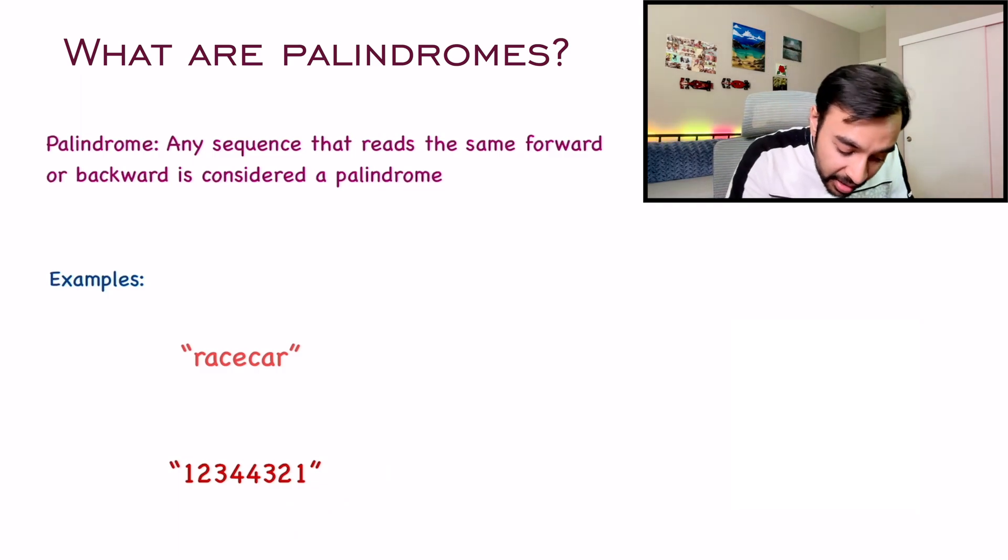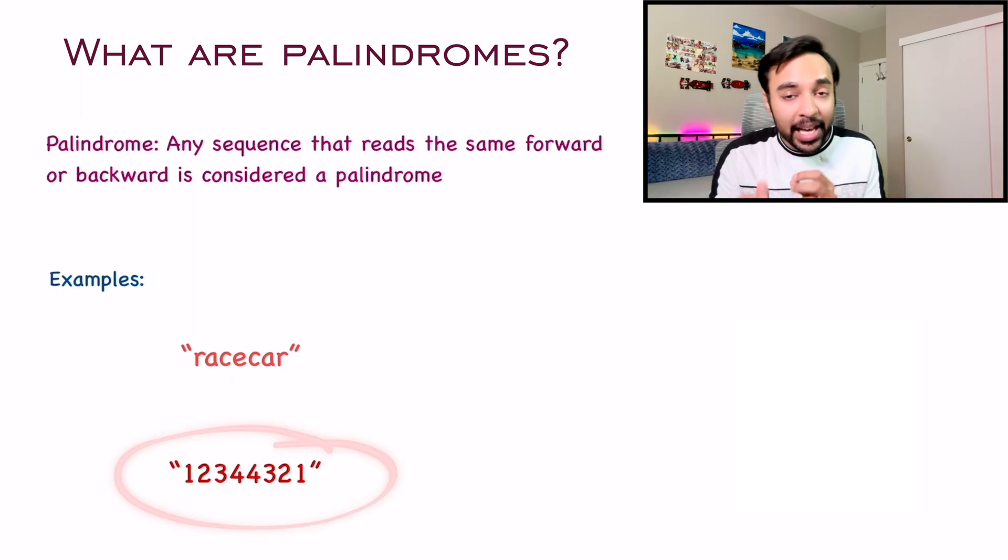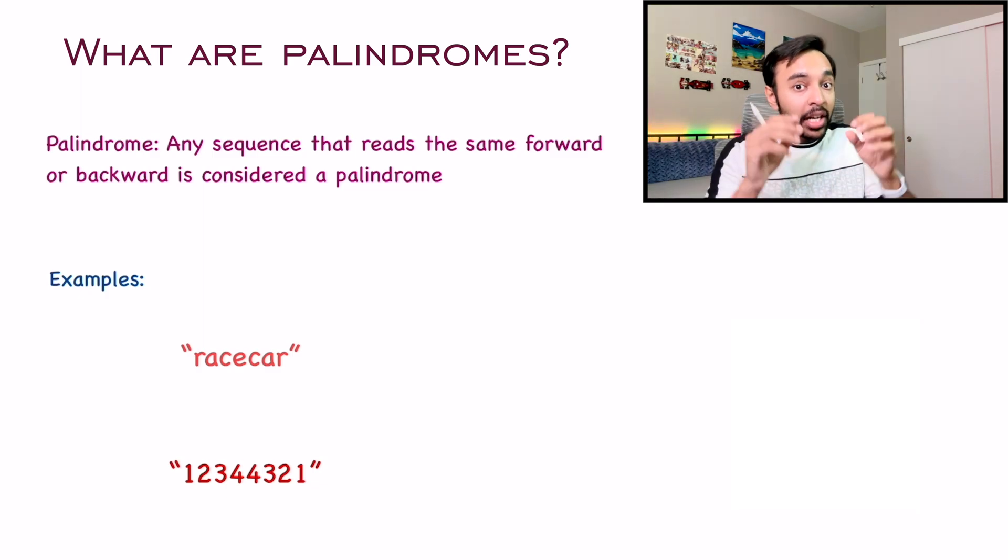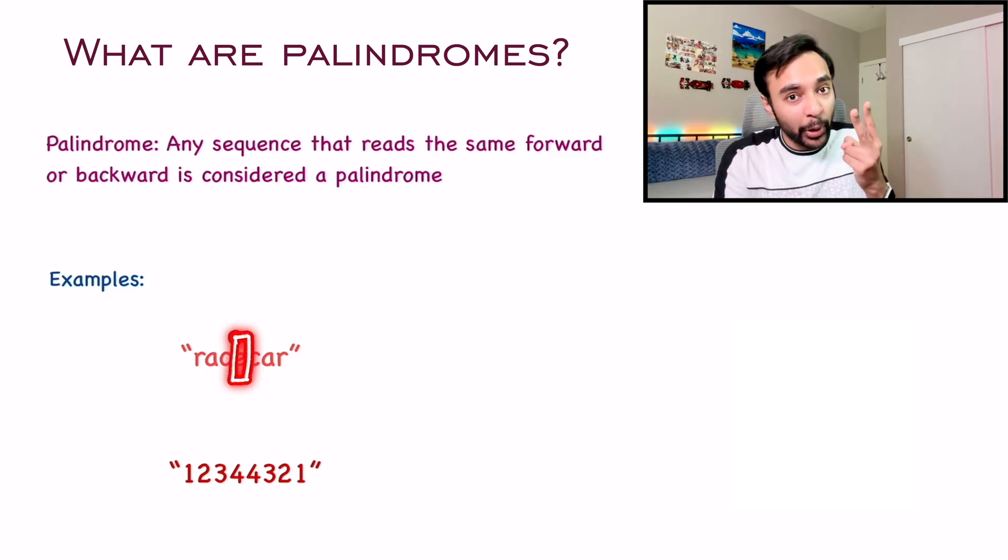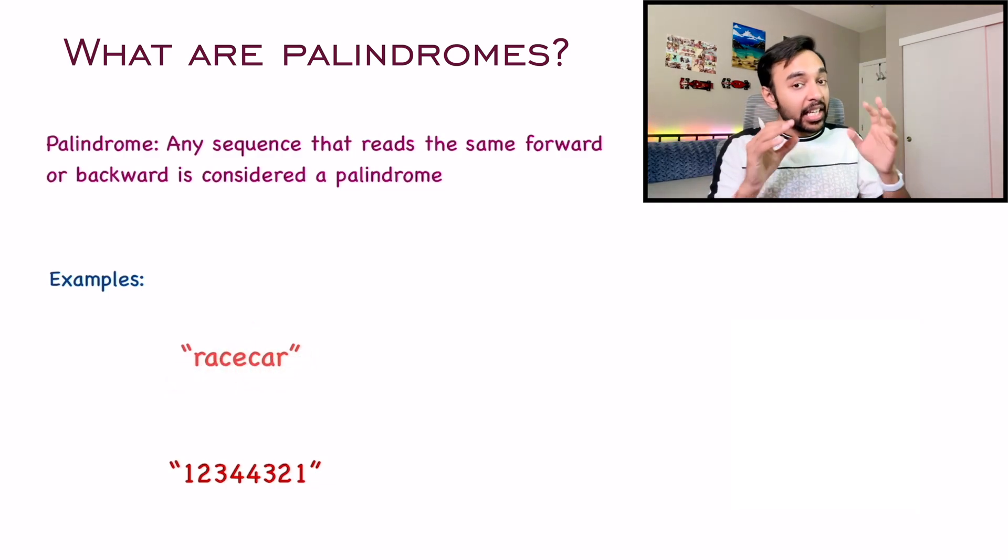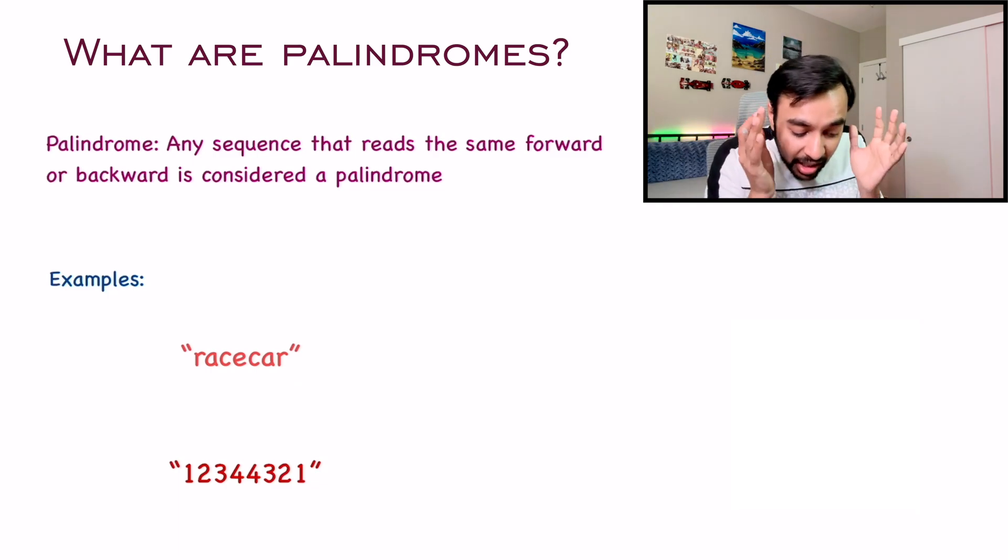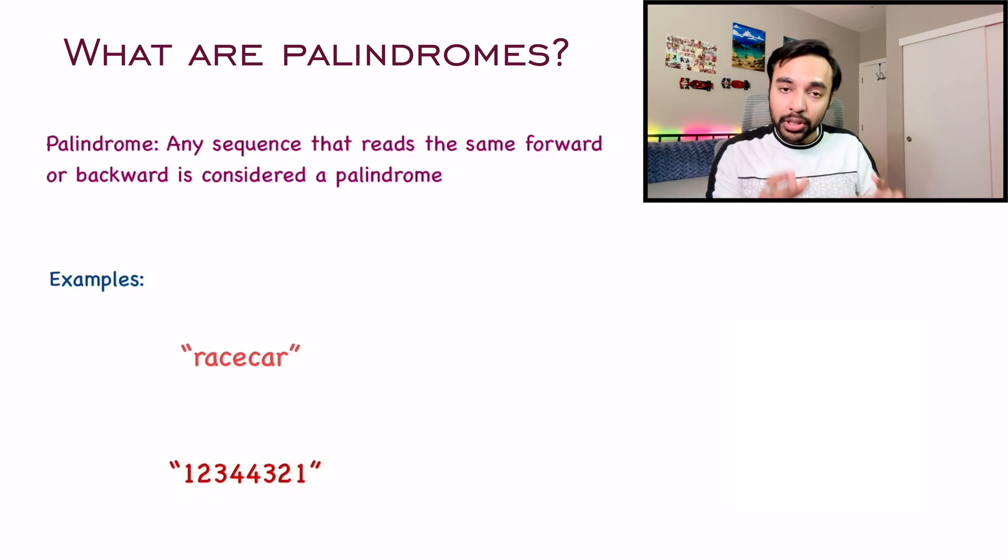Also notice that the first example has a length of seven characters and the second example has a length of eight characters and both can be palindromes. If your sequence has odd characters, then you will not find the middle element occurring twice. All of these other elements will occur twice. And if your palindrome has an even length, then all of these characters will occur twice. Even the middle character. So this is a basic overview of what is actually a palindrome.